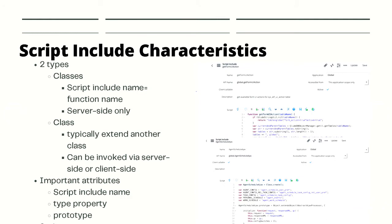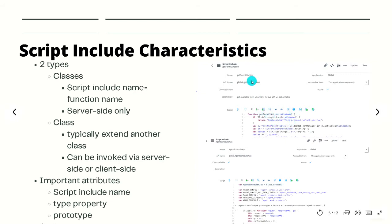Now let's talk about Script Include characteristics. There are two types. The first is a classless Script Include, where no JavaScript class is being created. This type must have the Script Include name equal to the function name. As you can see in this image, the name of the Script Include and the function in the script field must be exactly the same. Classless Script Includes are server-side only and cannot be invoked from a client script.